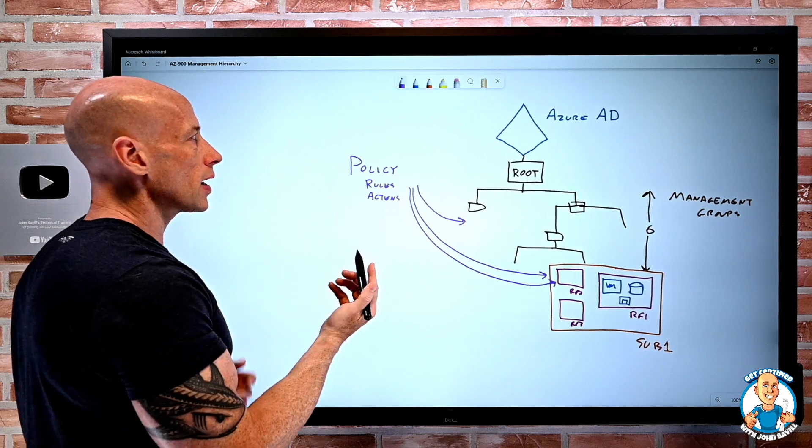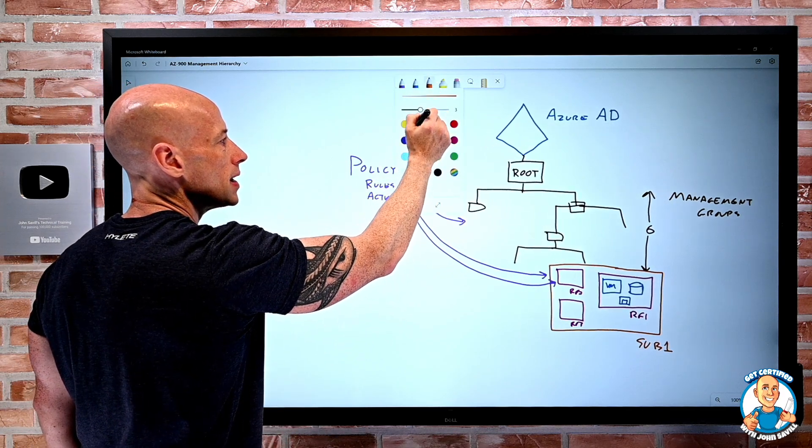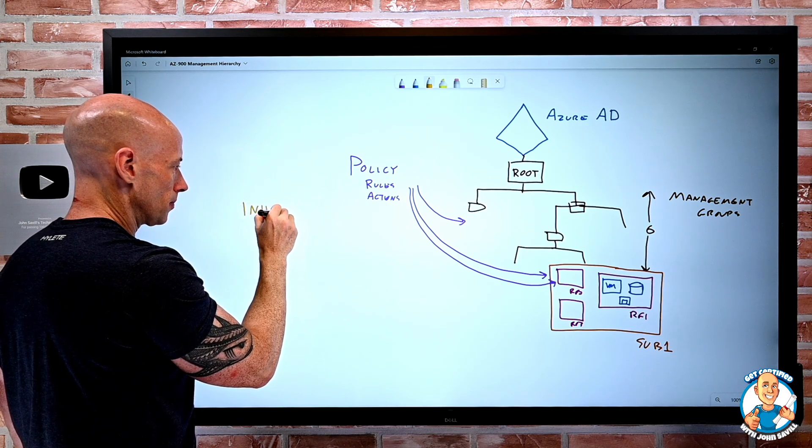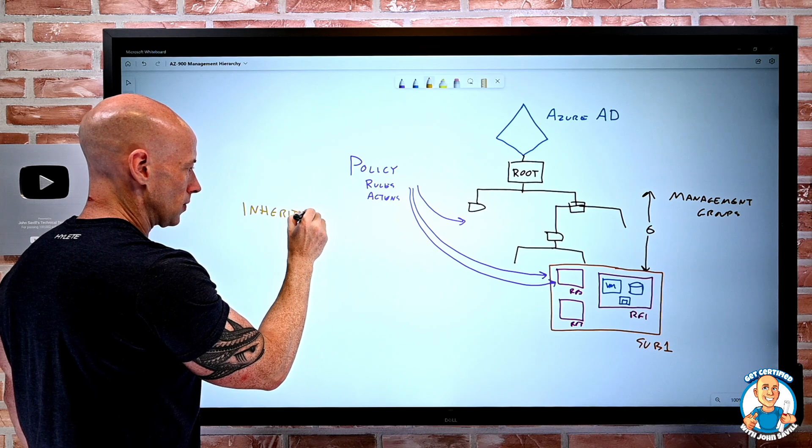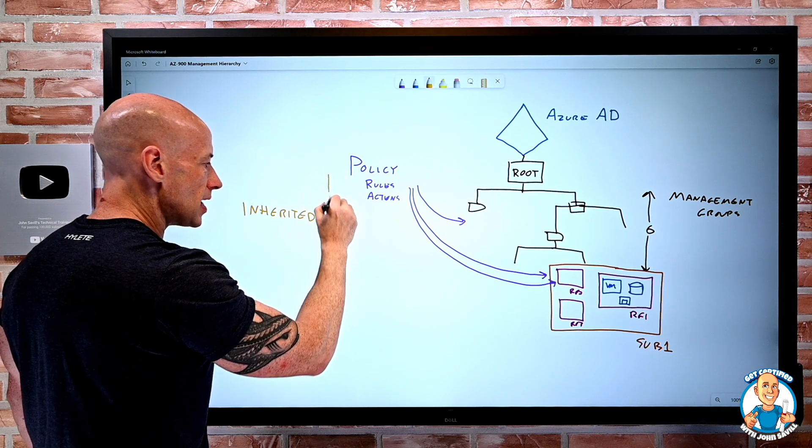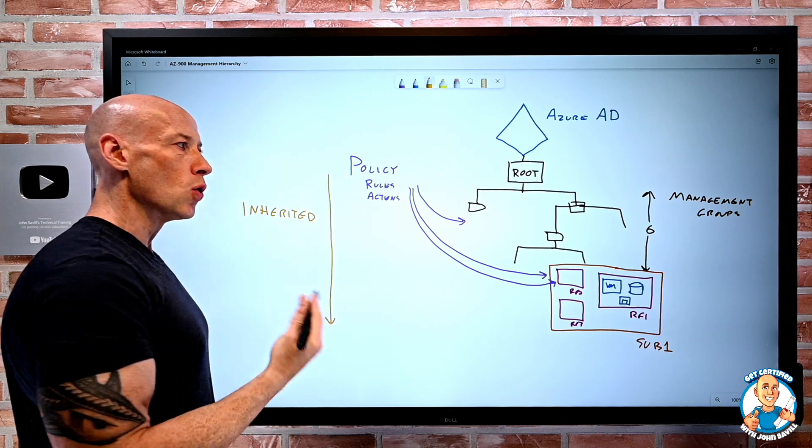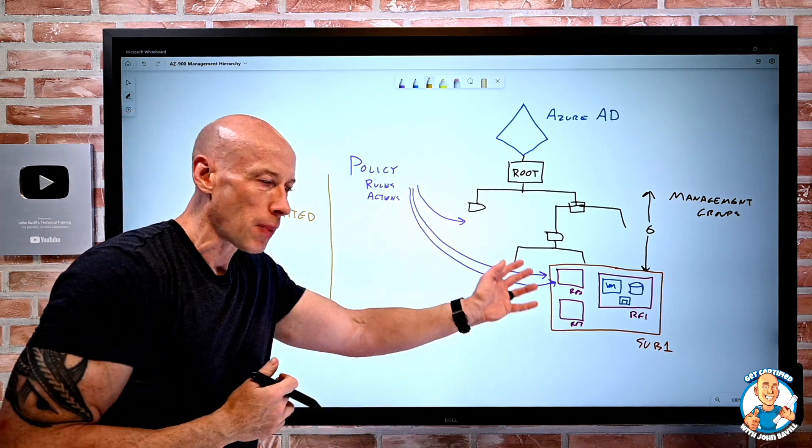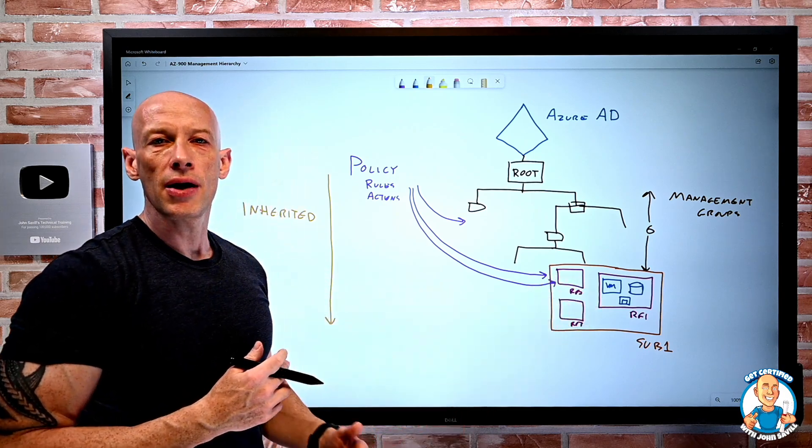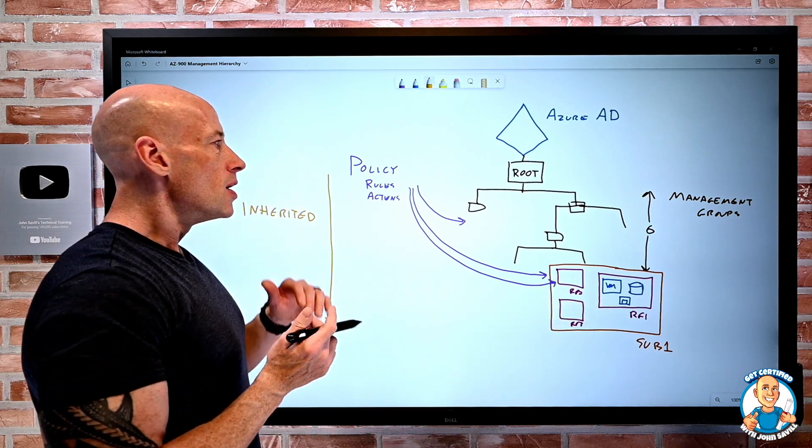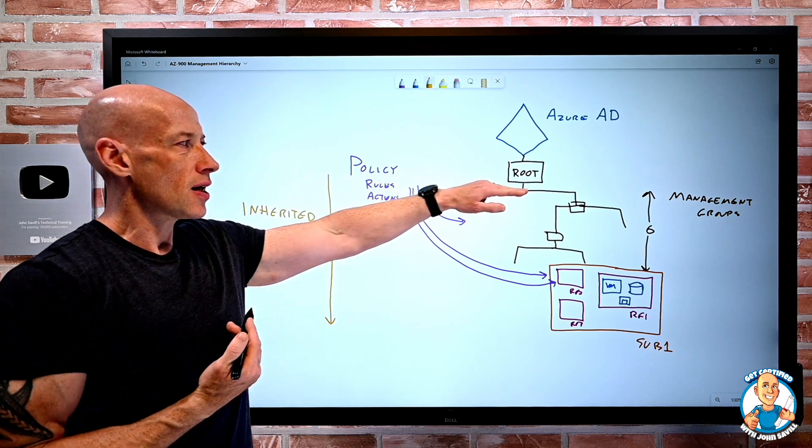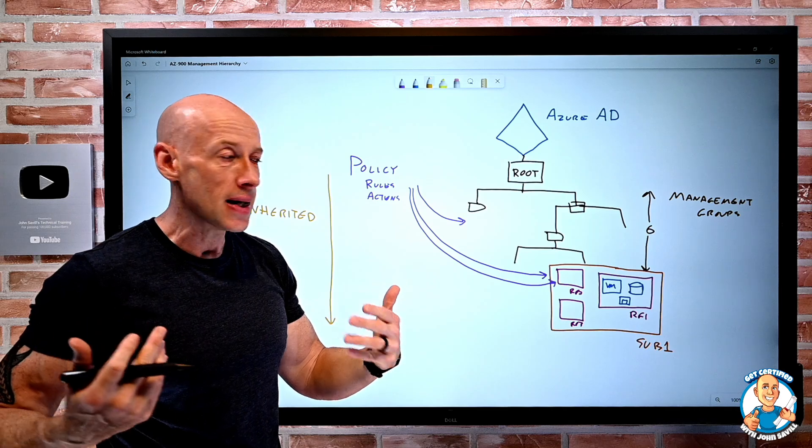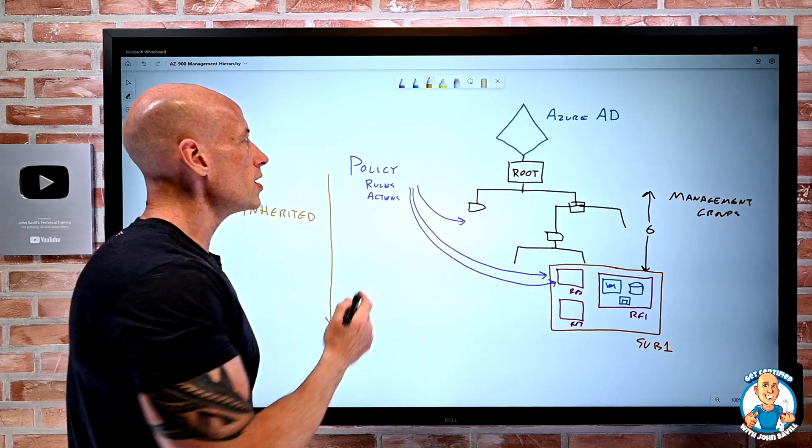For all of these things we're going to talk about, one of the key points is we get inheritance. So if I set a policy or anything else we talk about at a management group, it'll get inherited by the child management groups, by the child subscriptions, by the child resource groups, by the resources within the resource groups. So we tend to think of, we set things at high levels that are fairly broad and generic. We have to apply to the whole company and then get more specific as we get closer to the resources.